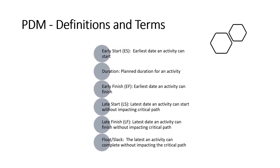The essential terms are: Early Start — the earliest date an activity can start. Duration — the planned duration for an activity. Early Finish — the earliest date an activity can finish. Late Start — the latest date an activity can start without impacting the critical path. Late Finish — the latest date an activity could finish without impacting the critical path.